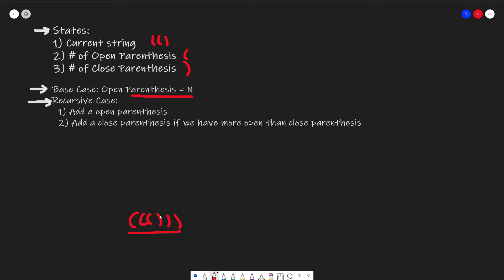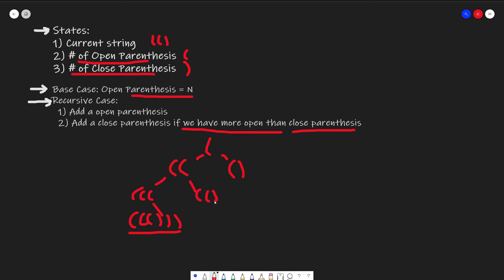In our recursive case, we can do two things. We can add an open parentheses and increment the number of open parentheses, or we can close the parentheses and increment the number of closed parentheses. We can only close the parentheses if we have more open parentheses than closed parentheses. Following these recursive functions, we gradually build out our answer.